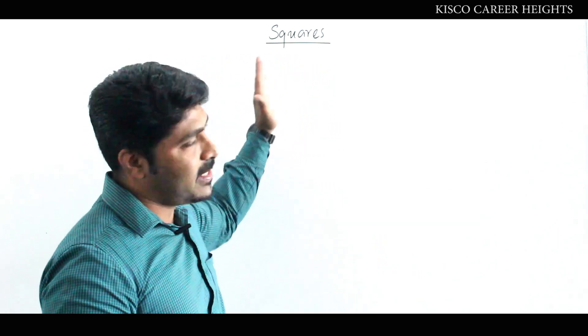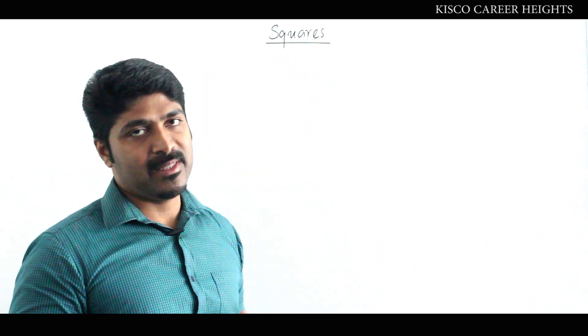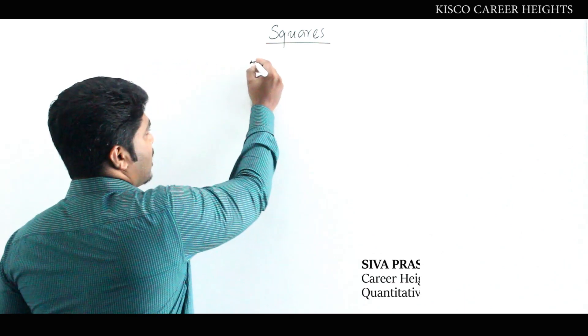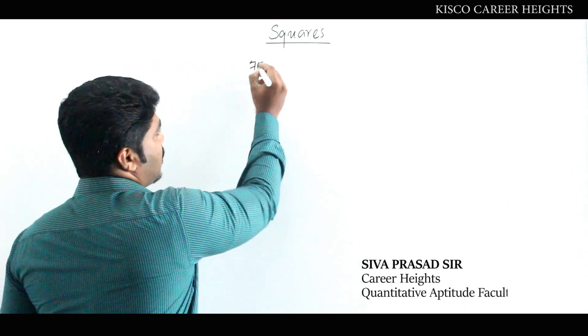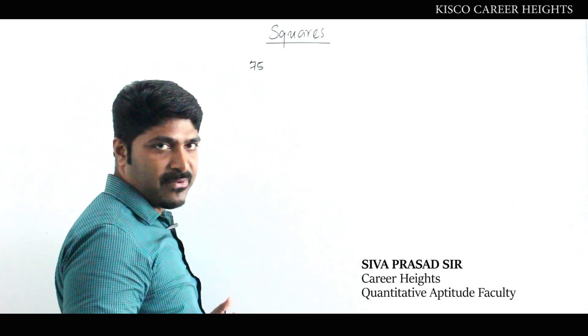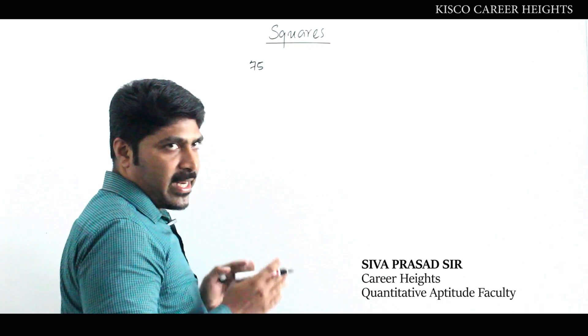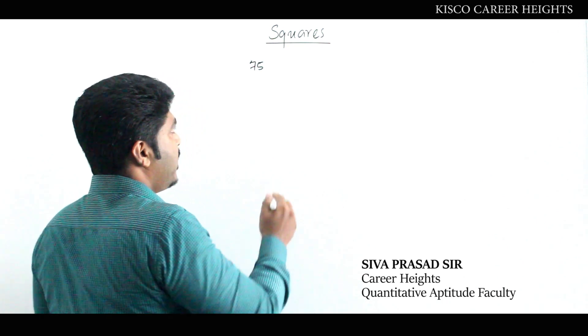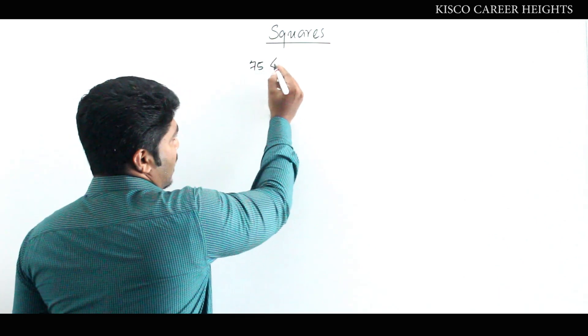Hi all, this is a continuation of our previous video about squares. Here I am going to discuss an interesting method to find out the squares of numbers from 75 to 125. In this range, we are considering 100 as the base.